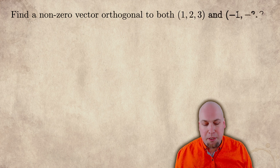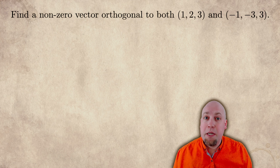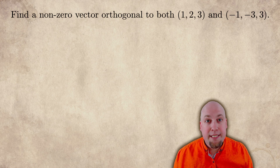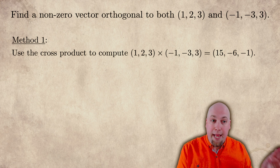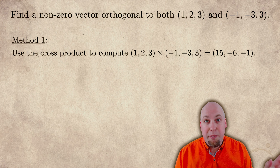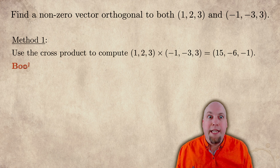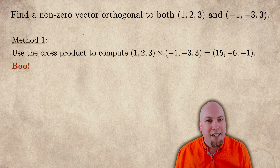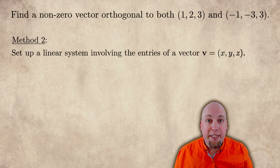So let's ramp up a little bit and talk about how to do this in three dimensions. Suppose that you're in three dimensional space, and you're given two vectors: (1, 2, 3) and (-1, -3, 3). You want to find a vector that's orthogonal to both of them. One way of doing this that you might have seen already is via something called the cross product — an operation that takes in two vectors, spits out another vector, and that other vector is always going to be orthogonal to the first two. We're not going to do that, because I don't like the cross product.